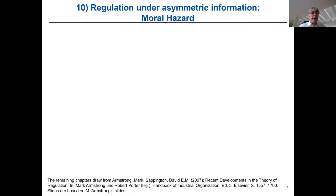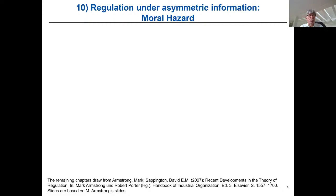As with the whole second part of this course starting from chapter 8, this draws on the handbook article by Mark Armstrong and David Sappington in the Handbook of Industrial Organization. I used some of Mark Armstrong's slides and adjusted them — not implying any responsibility on his side. What you should also do is look into that article directly. So what is our new asymmetric information problem — moral hazard? In the previous adverse selection setup, some exogenous characteristic was unobserved — is the firm high cost or low cost? The firm couldn't do anything about it.